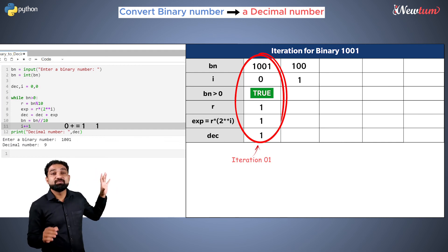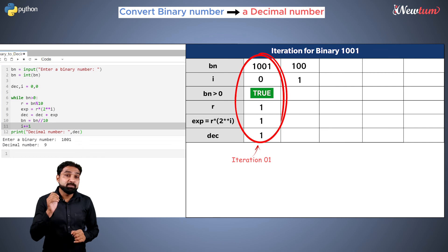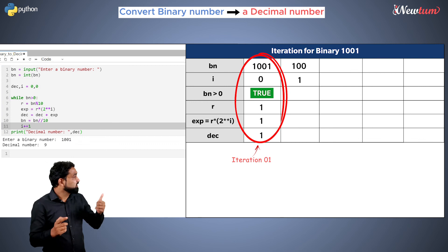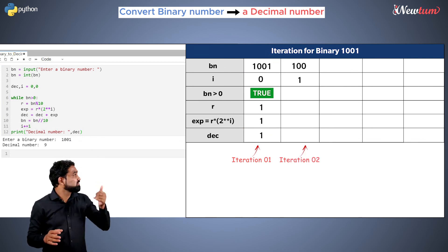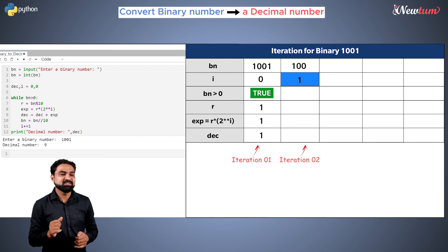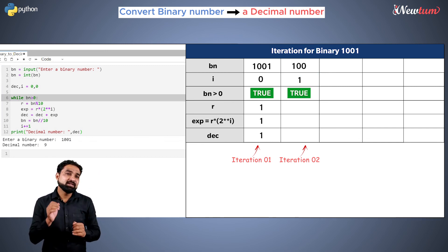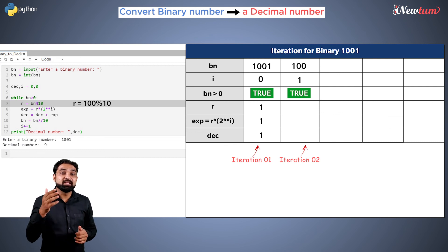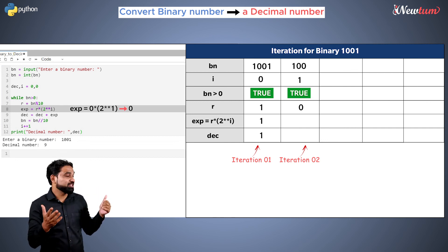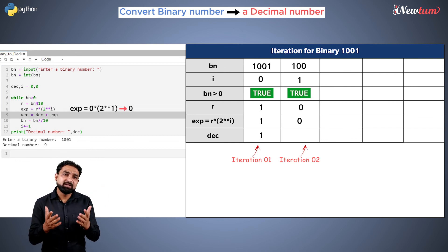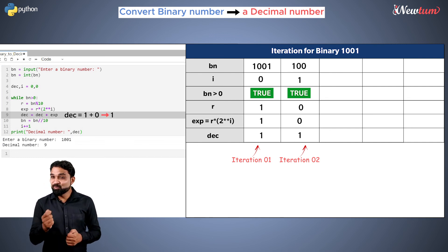Listen, this iteration is very very important. They help us to actually understand the core logic. Now let's move to the second iteration. In the second iteration, value of i is 1 and the value of bn is 100. Hence in this line we will get the remainder as 0. So the expression value will be 0, since we have multiplication with 0. And the dec value will remain as 1.